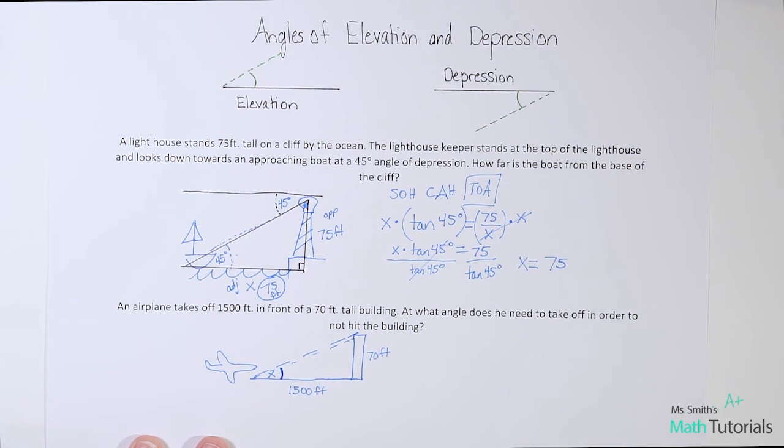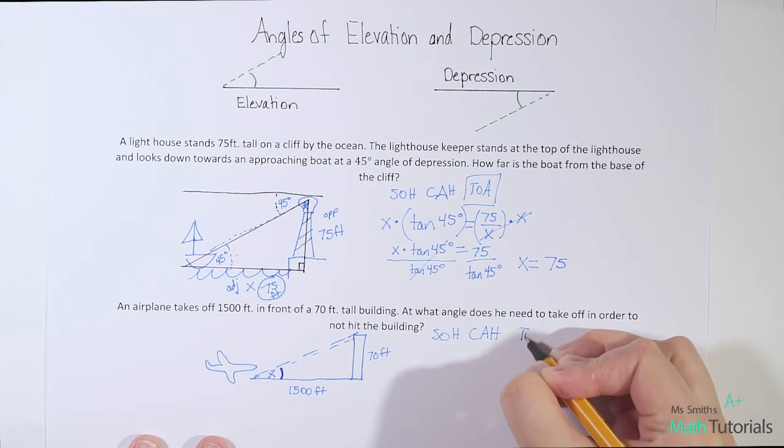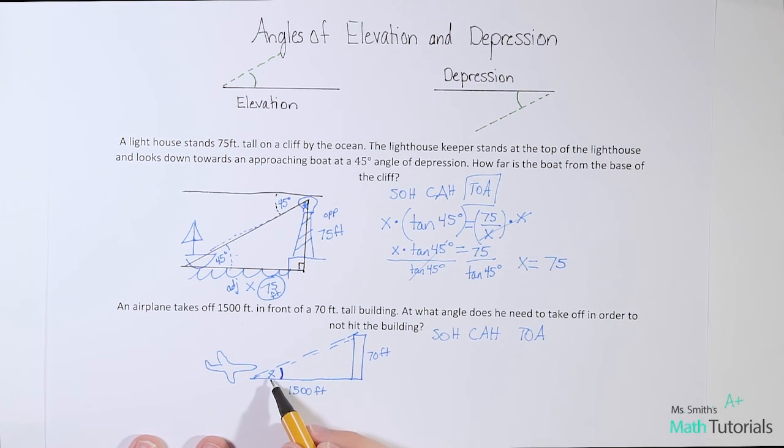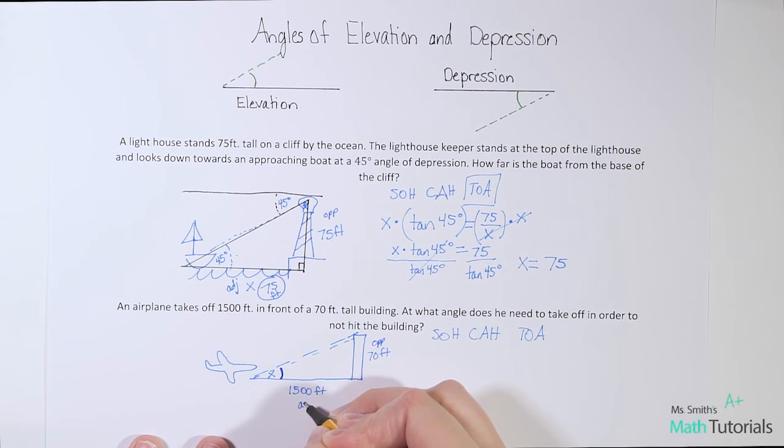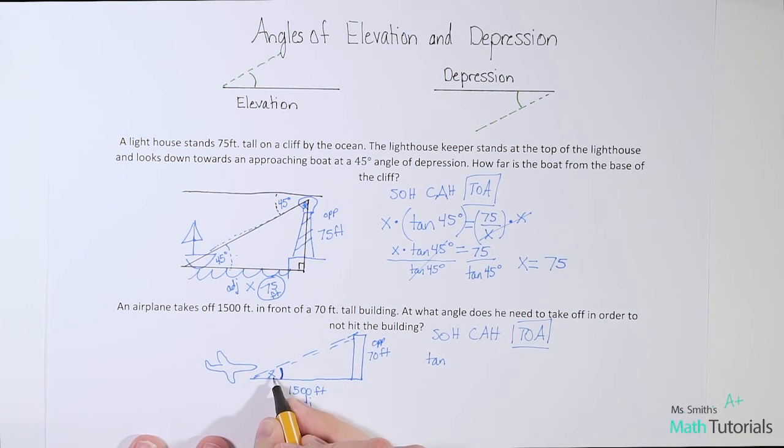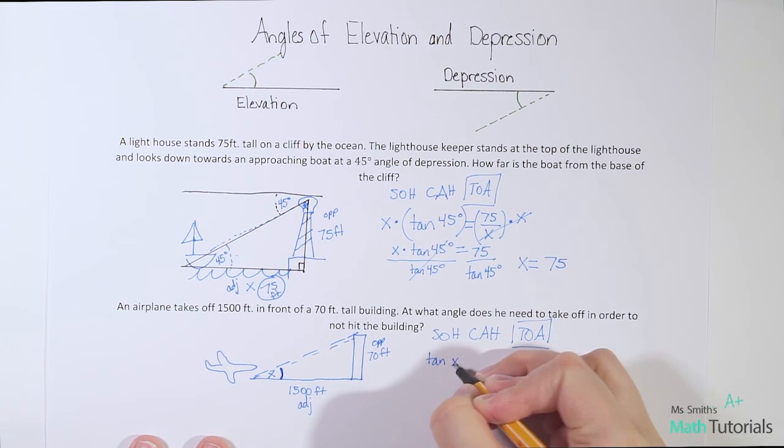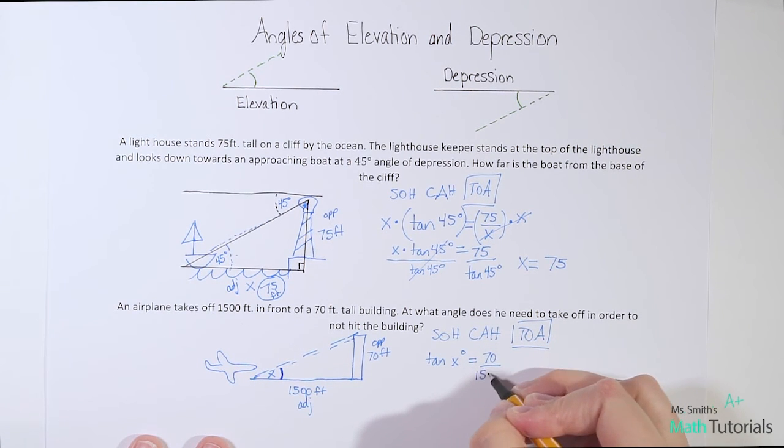In this case, this would be a perfect situation for inverse SOHCAHTOA. I've got SOH, CAH, and TOA. Which one would I use? Well, in this case, I've been given the opposite and I've been given the adjacent. This is the adjacent. And I want to find the missing angle. So which uses opposite and adjacent? It's tan again. So I've got tan of, I don't know what angle—that's what I'm looking for. Tan of x degrees equals opposite 70 over adjacent 1500.